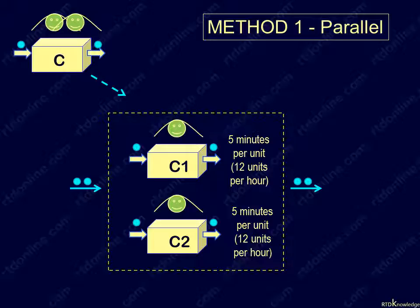The new station C, made up of substation C1 and C2, can now work on two units at the same time. Its capacity per hour will be the sum of those of the two operators working in parallel, or 24 units per hour, which is equivalent to a cycle time of 2.5 minutes per unit.